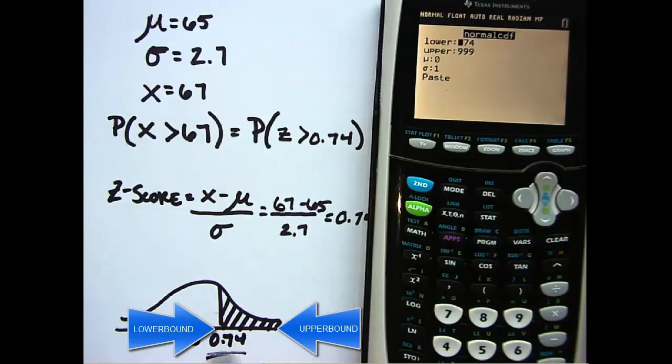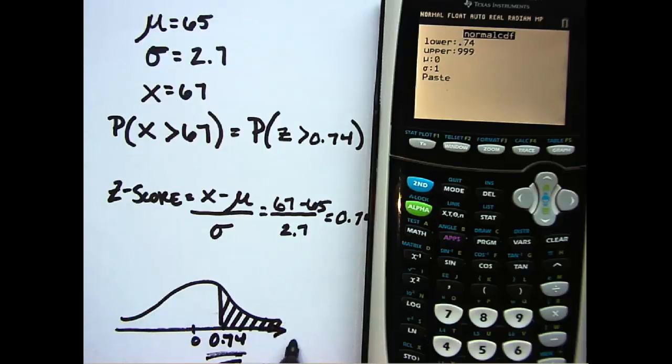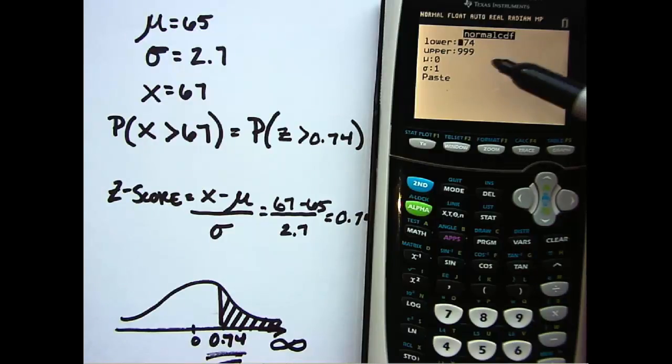lower bound, or where the highlighting starts, so that's 0.74. And then the upper bound, or where the highlighting ends—so technically the upper bound would end at positive infinity, but for all intents and purposes, 999 is sufficient. So